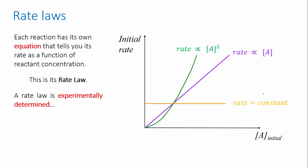We can turn these proportionalities into proper equations that describe how the rate of the reaction depends on the concentration of its reactants, and this equation is called the rate law for that reaction. Each reaction has a different rate law, and each reaction's law has to be determined by running rate experiments.